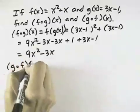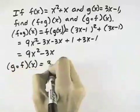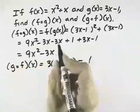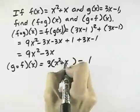Going the other direction, g composed with f of x just says start with our function g, but take the x out, and replace it with our function f, which is x squared plus x.